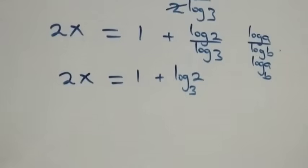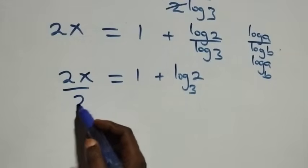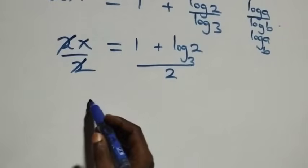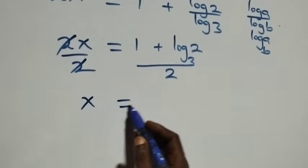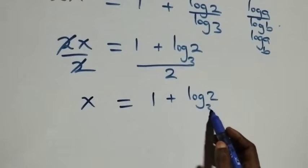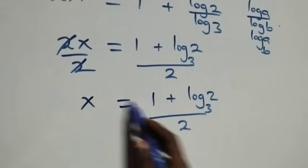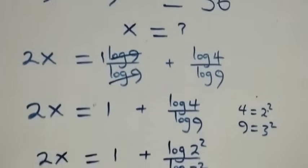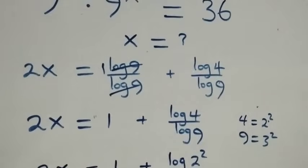In the next step, we apply the change of base formula, so log 2 over log 3 becomes log 2 base 3. Then we divide both sides by 2. Dividing each side by 2, the 2s cancel each other, and we are left with x equals 1 plus log 2 base 3, all over 2. So the value of x in this given problem is x equals (1 plus log₃2) / 2.